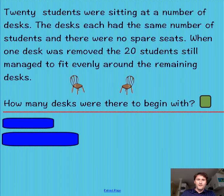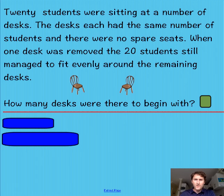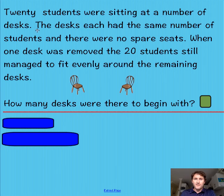Let's have a look at the first problem — you might recognise this one. I'm assuming you're watching this video because you had a bit of trouble with it initially, so let's have another look. When we're solving problems, the first thing we have to do is read it very carefully. So let's read it carefully together: 20 students were sitting at a number of desks. The desks each had the same number of students and there were no spare seats. When one desk was removed, the 20 students still managed to fit evenly around the remaining desks. How many desks were there to begin with?